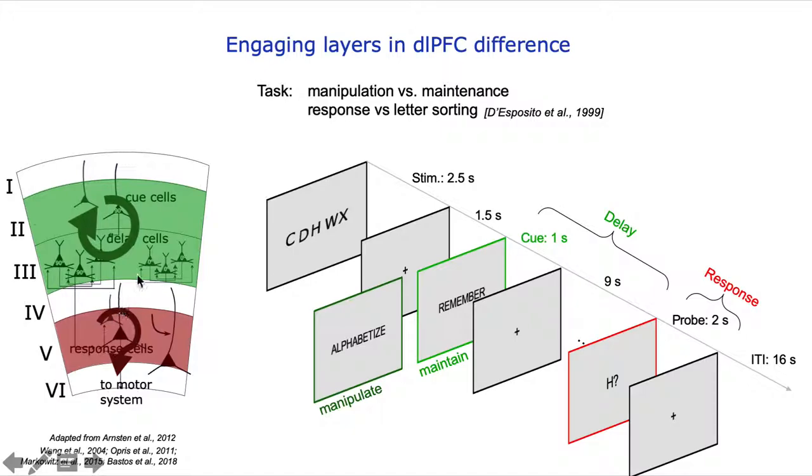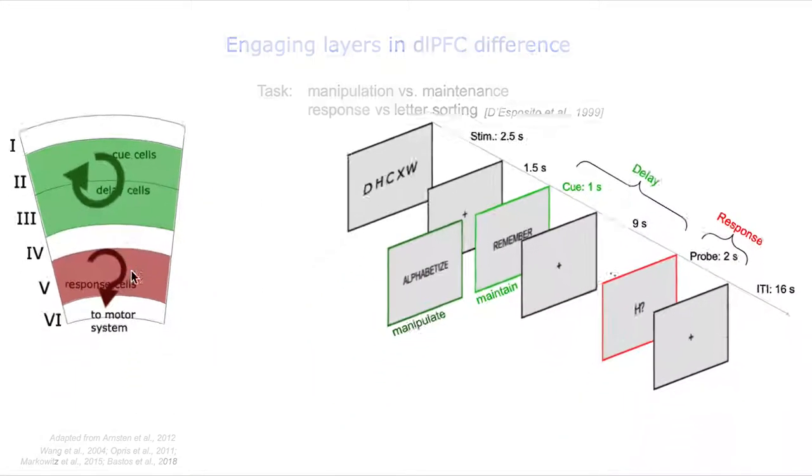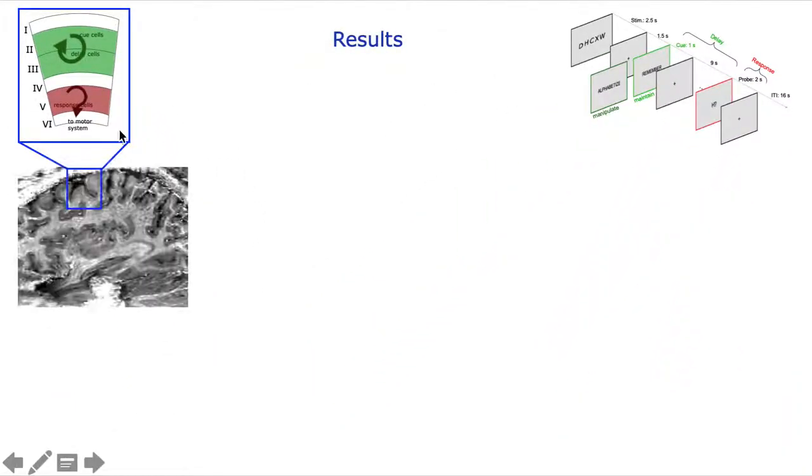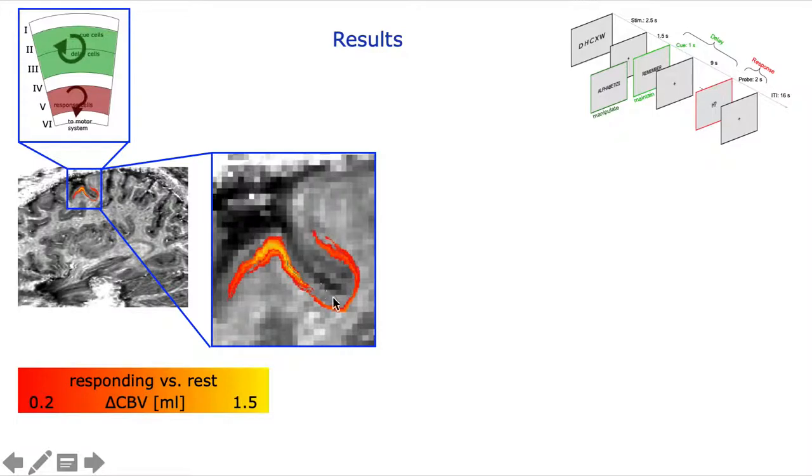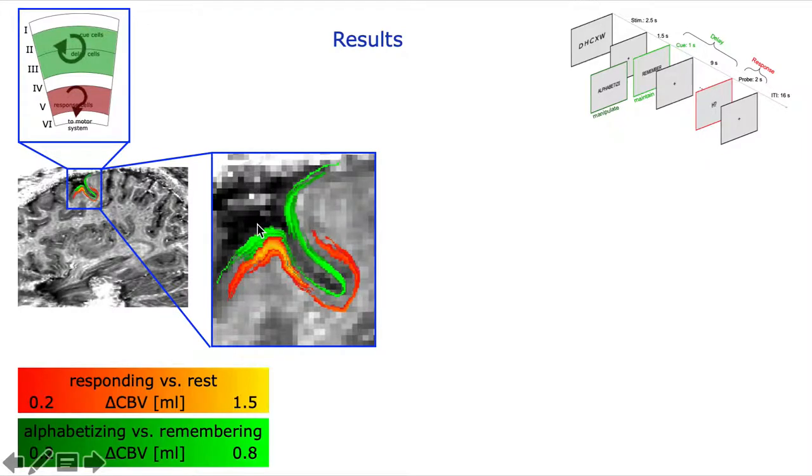Upon analysis of the results, we find that this simplified microcircuitry model really nicely explains our measured signals. This is the CBV-weighted EPI with its inherent T1 contrast. Zooming into the dorsolateral prefrontal cortex, you can see that the output response activity really nicely follows the deeper layers, whereas the alphabetization task mostly stays in the superficial layers.